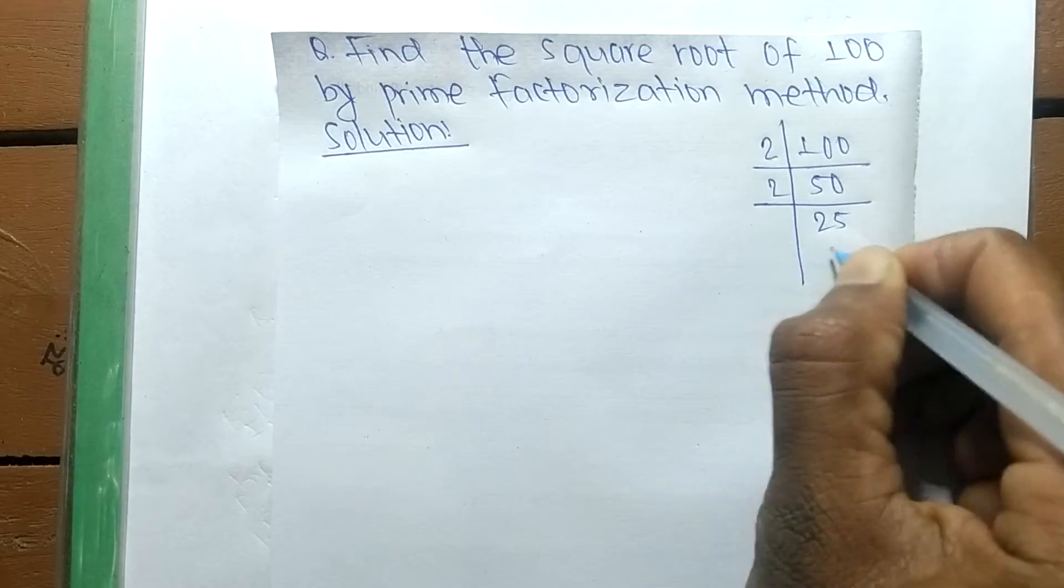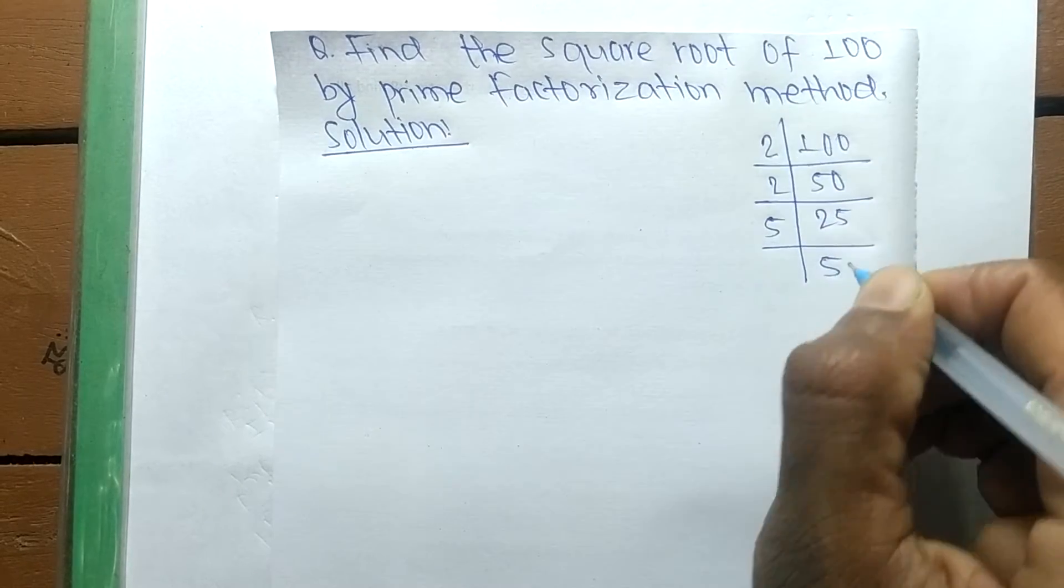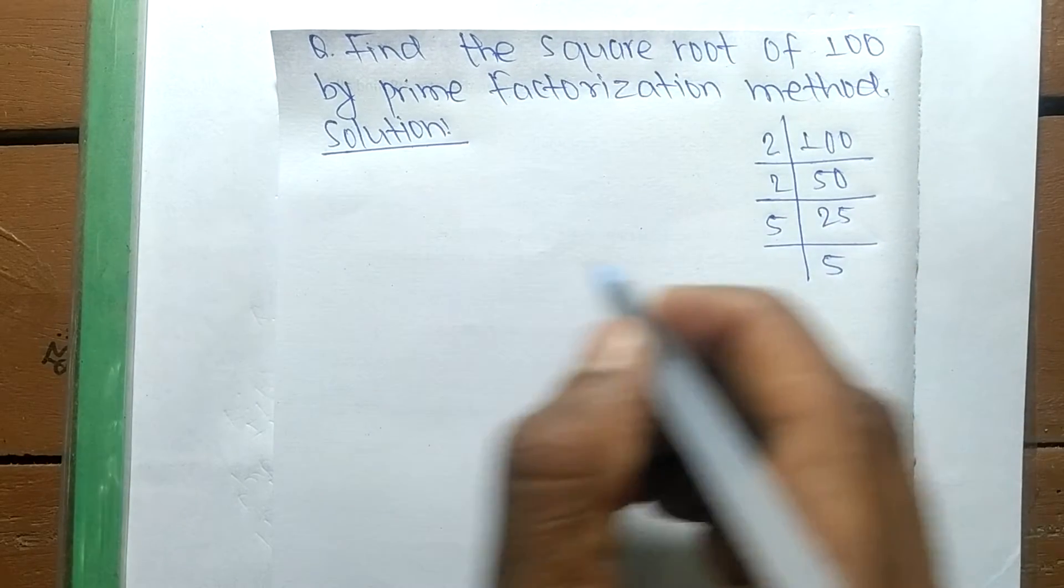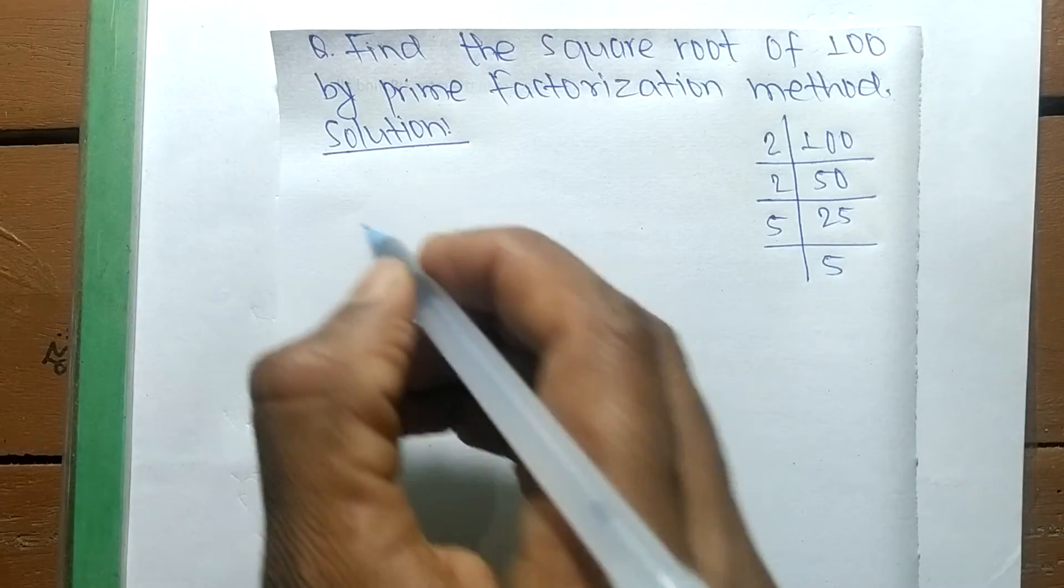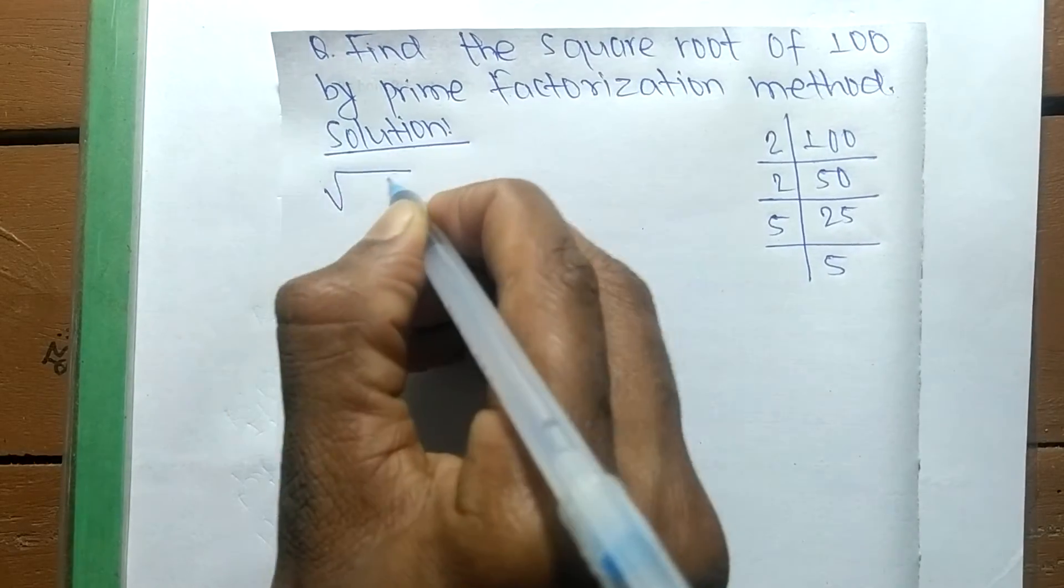2 times 25 means 50, and 5 times 5 means 25. After finding out the prime factors, now we find the square root of 100.